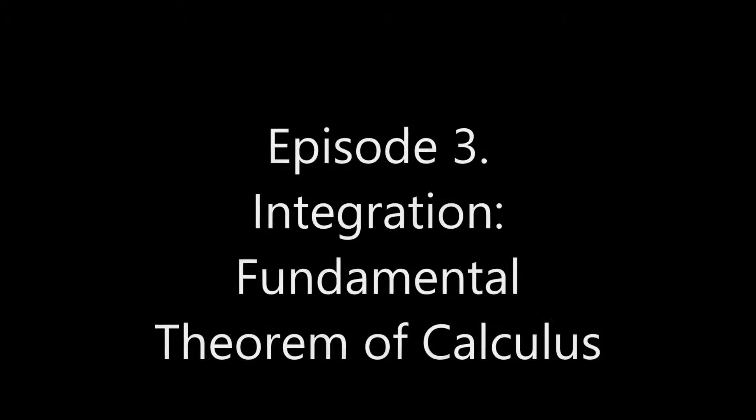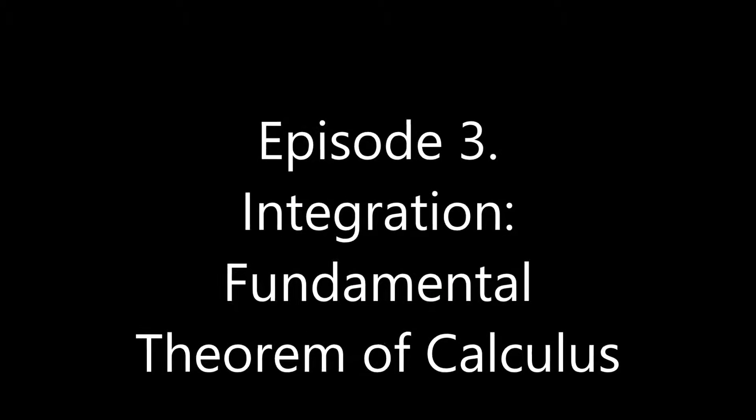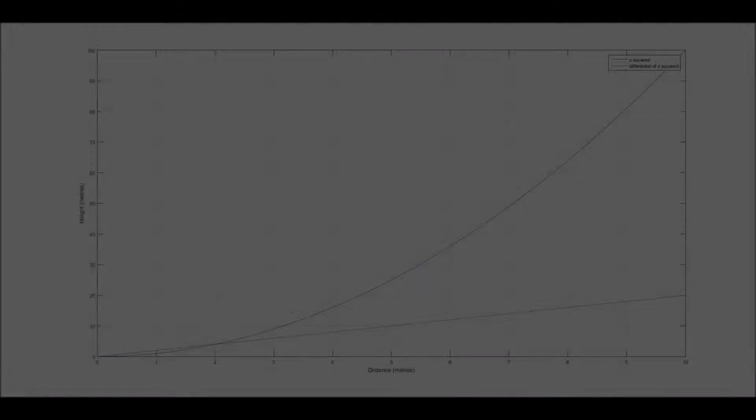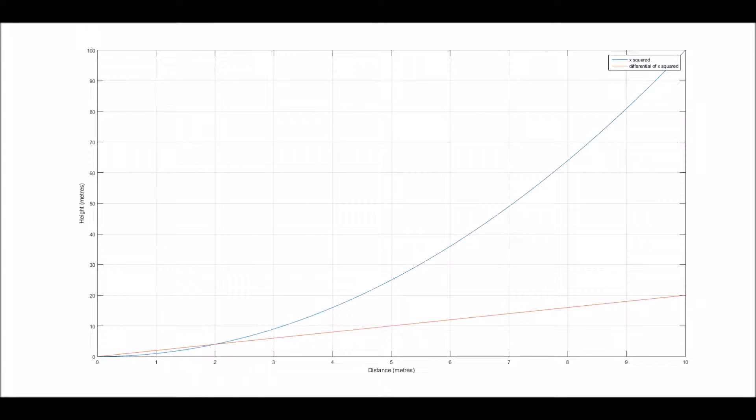Hi. So now we've got a bit of a handle on how to differentiate a function. How do we use this to solve anything in particular? Well, let's use our differential of x squared that we derive in episode 1 to be 2x. We know that this means at any point in x, the function x squared is increasing by 2x for every change of one unit in x.